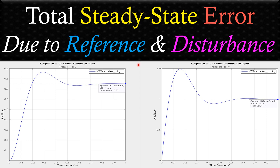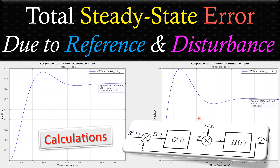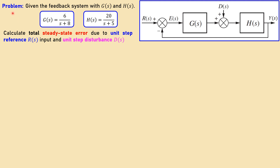So we have the following configuration. You can see here we have the reference which is our desired command input. This is a disturbance we don't want, and we would like to know what the total response is due to those two inputs and how much error we have due to those two inputs. We will look at our calculations step by step and also verify these calculations in simulations in MATLAB. We have the following problem: given the feedback system with G and H, and also the disturbance and the reference R.